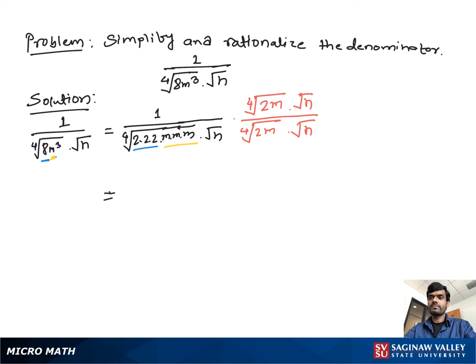Then we get the fourth root of 2m times the square root of n, over the fourth root of 2 to the fourth times m to the fourth, times the square root of n squared.